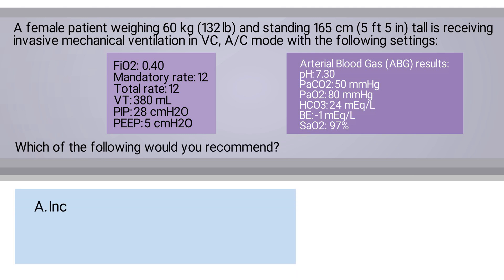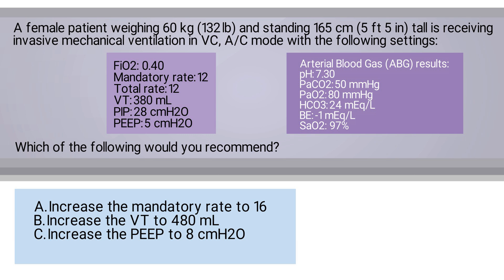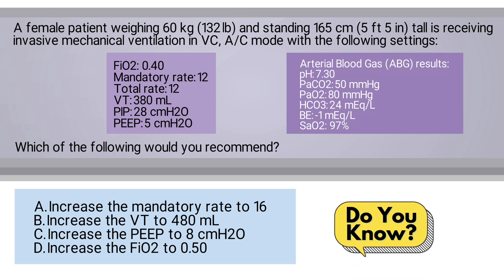A: Increase the mandatory rate to 16. B: Increase the tidal volume to 480 milliliters. C: Increase the PEEP to 8 centimeters of water pressure. Or D: Increase the FiO2 to 50%. Do you know the answer?